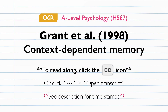Grant et al., 1998. Context-dependent memory. Background: What is context-dependent memory? In the mid-1970s and the early 80s, a number of research studies were carried out to investigate the effects that people's environment can have on their memory. Context-dependent memory is a phenomenon that occurs when individuals have better performance on a memory test when the test occurs in the same environment in which the remembered material was originally studied.